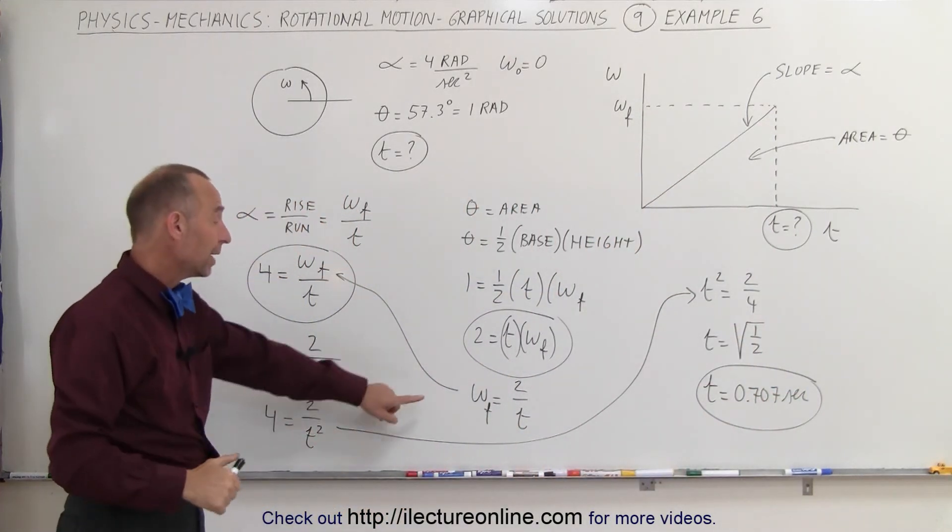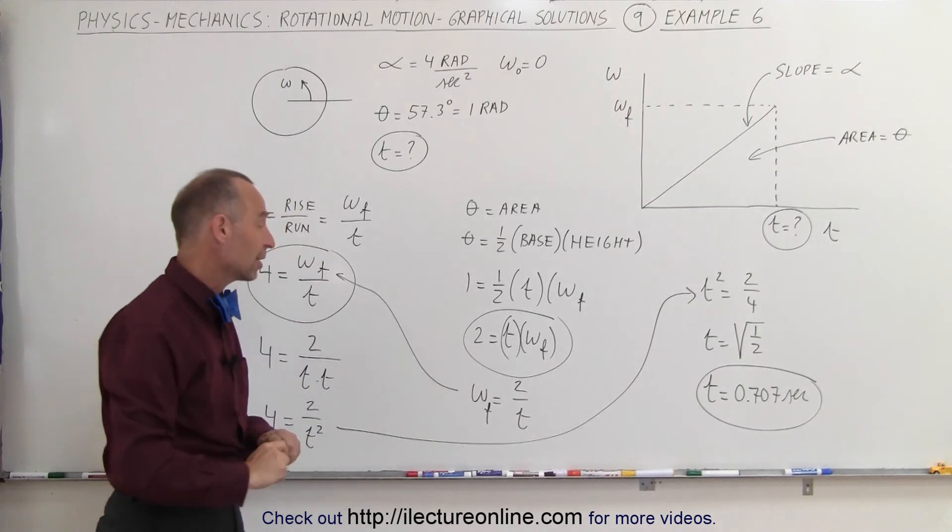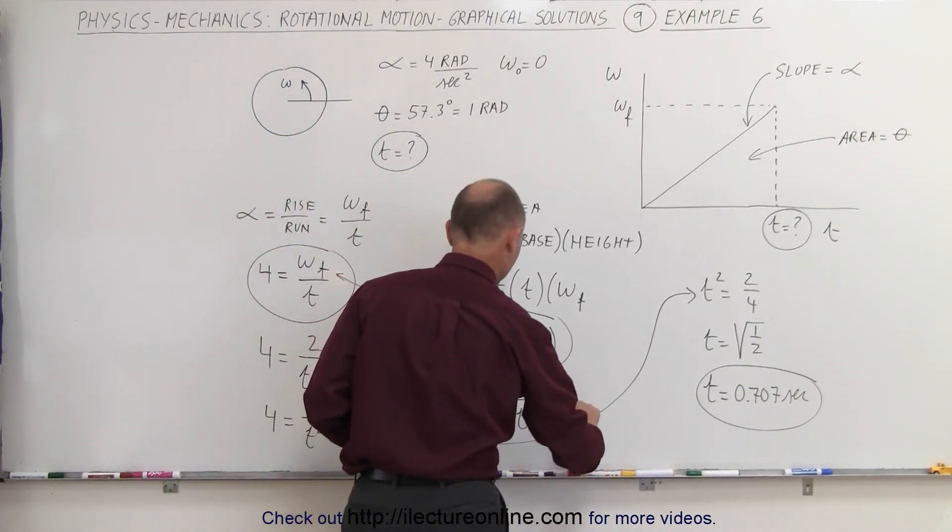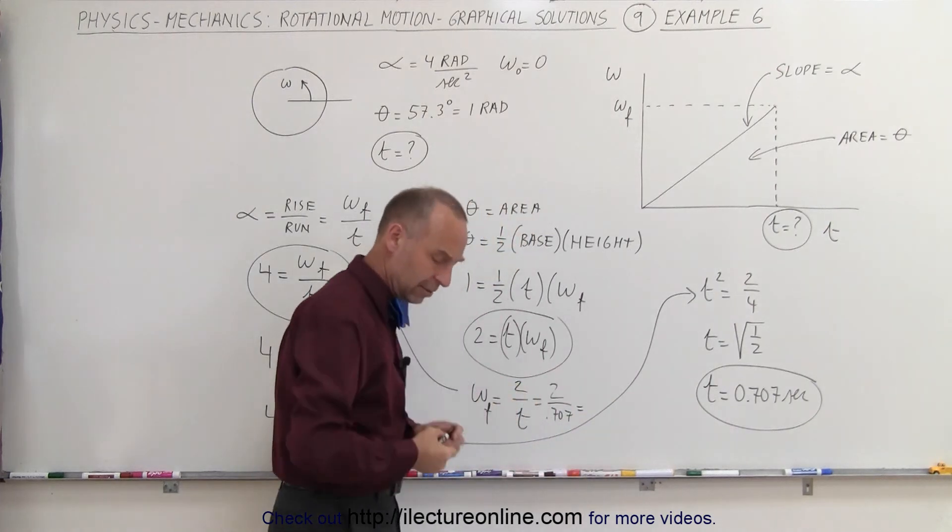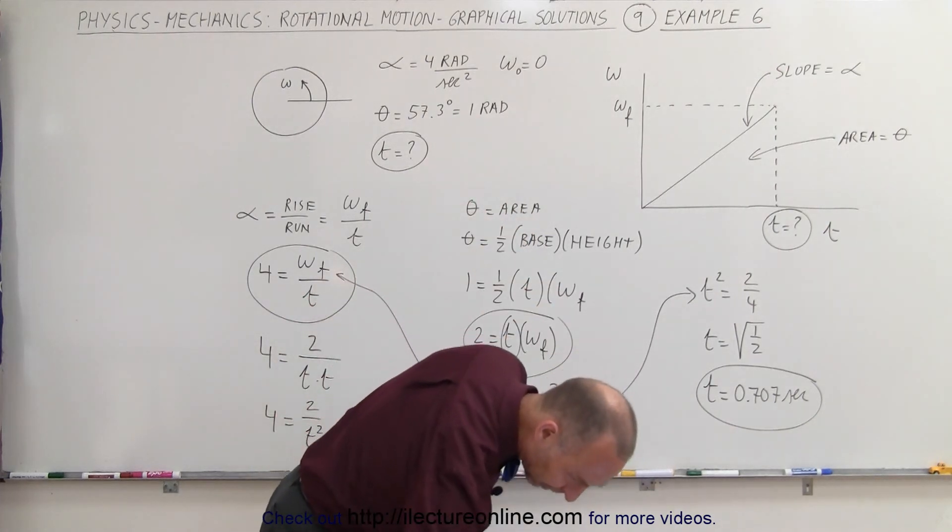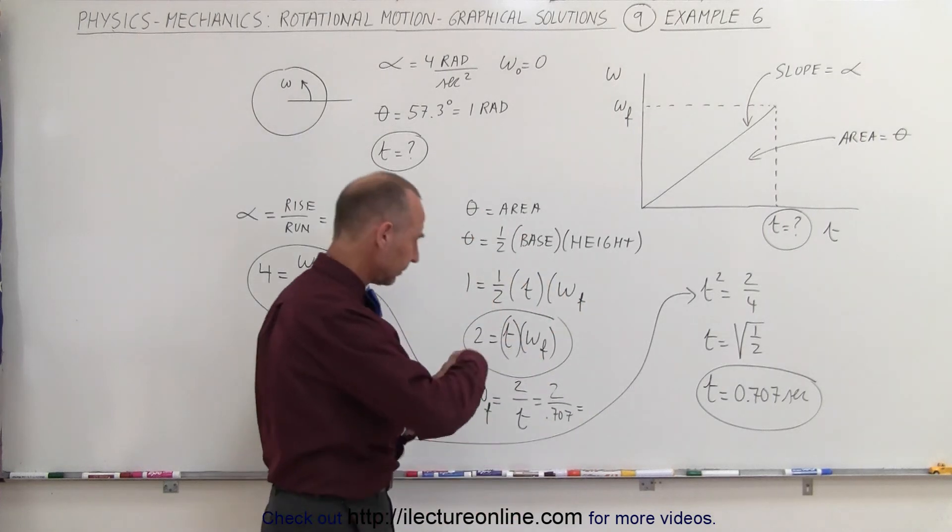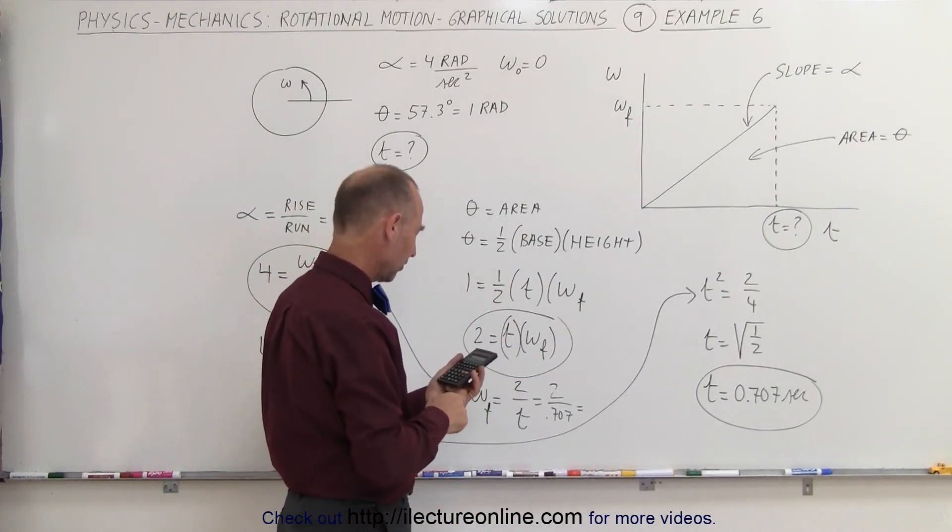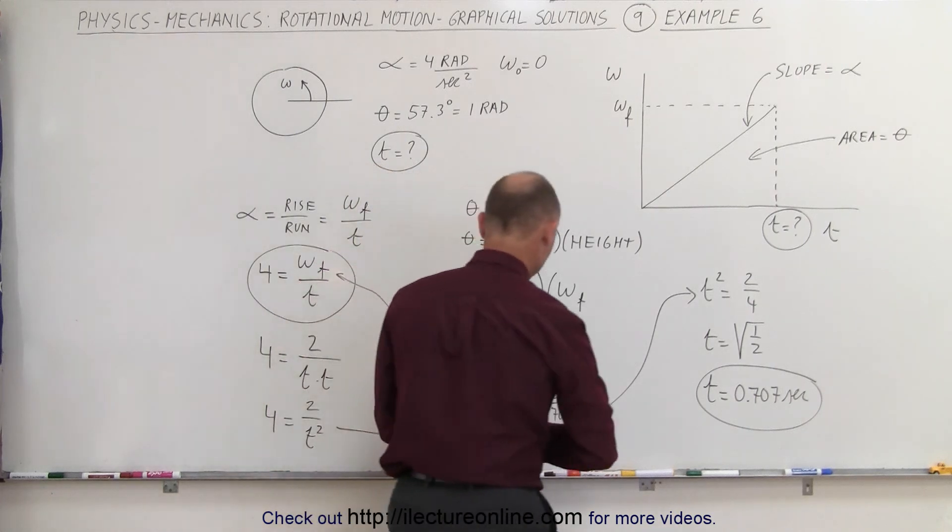If you now want to find out what the omega is, you can plug in the time over here, and you can say, well, this is equal to two divided by 0.707. And, let's see here. I've got a calculator here somewhere.